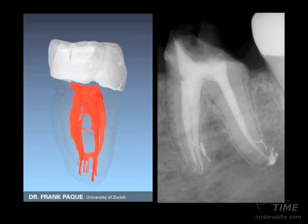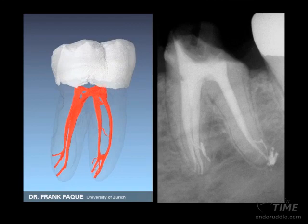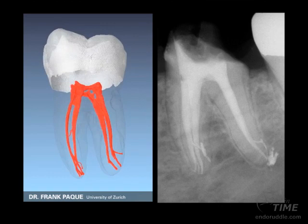Notice the mesial root — there's a mid-mesial coming off in the apical one-third, and a considerably large lateral canal off of both the mesial and distal systems. I'm telling you, how could you do this for over 30 years if these canals weren't systems? It would become boring.